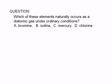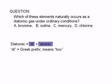Which of these naturally occurs as a diatomic gas under ordinary conditions? The term diatomic comes from the Greek prefix di-atomic. Di- means two.